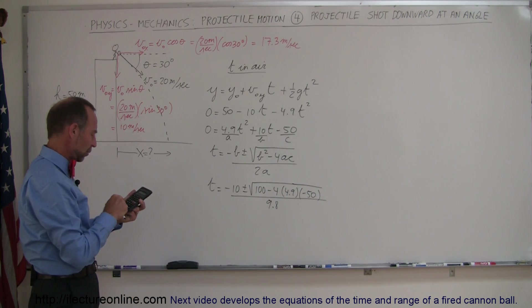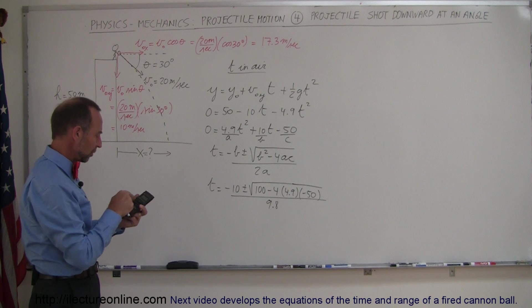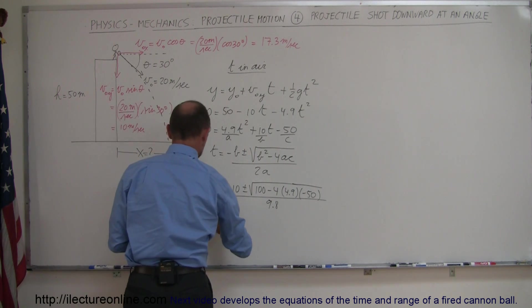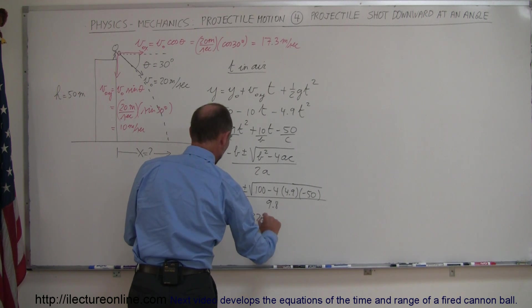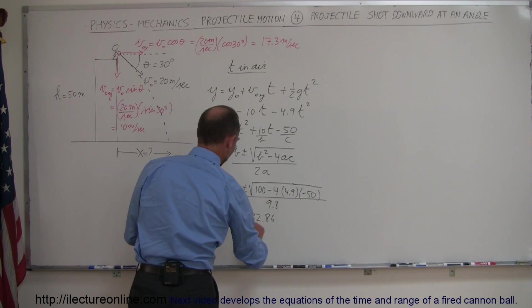So we have 4 times 4.9 times 50 plus 100, take the square root of that, and so we have t is equal to minus 10 plus or minus 32.86 divided by 9.8.